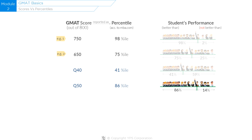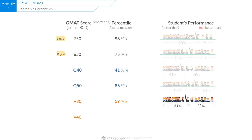Now let's take a look at verbal scores to see a similar comparison. We will take two scores: V30 and V40. V30 corresponds to a 59th percentile ranking — that is, this student did better than 59% of people who took the exam. Likewise, V40 corresponds to a 91st percentile ranking, meaning this student did better than 91% of people who took the exam.